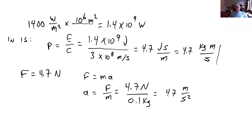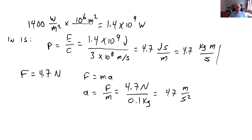It provides a surprisingly large acceleration, but it relies on having a very large sail — one square kilometer — on a very small payload of 100 grams, roughly the size of a hockey puck. It's not something that's going to push anything like a manned vehicle through space.